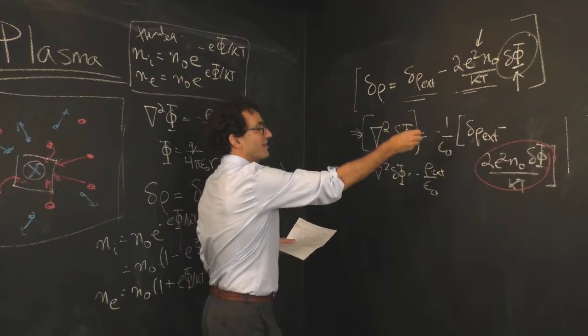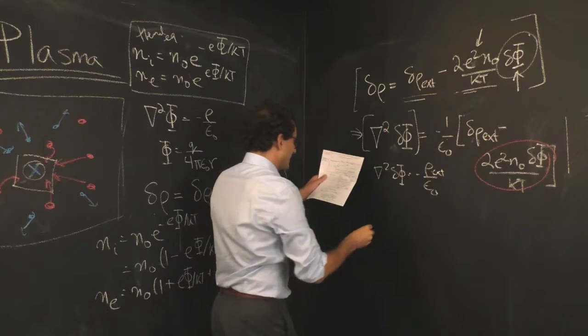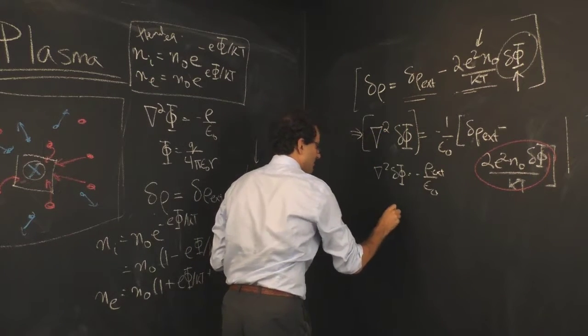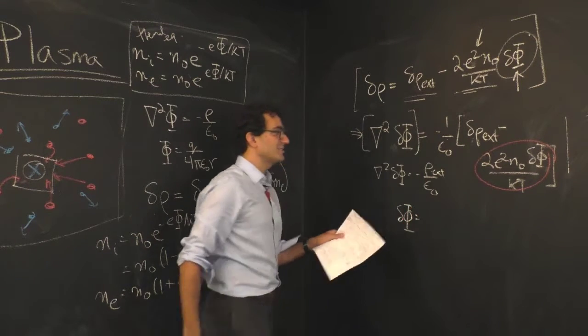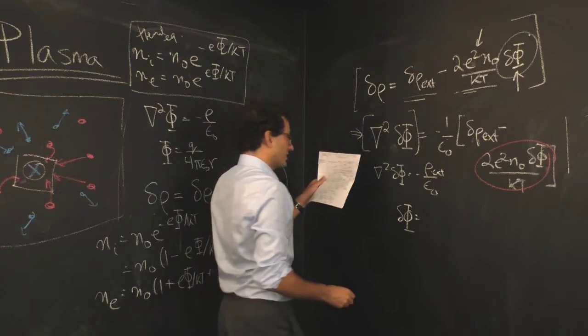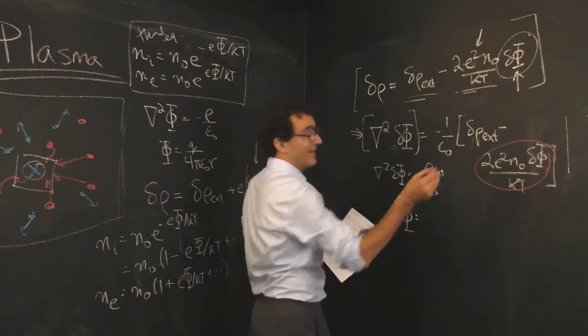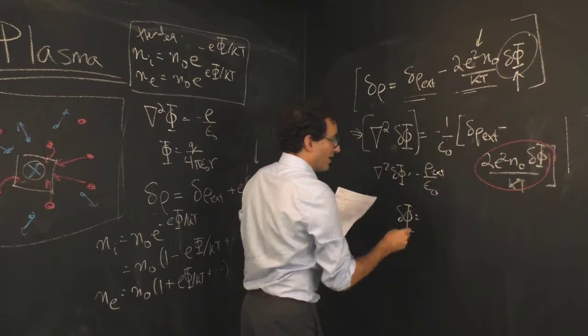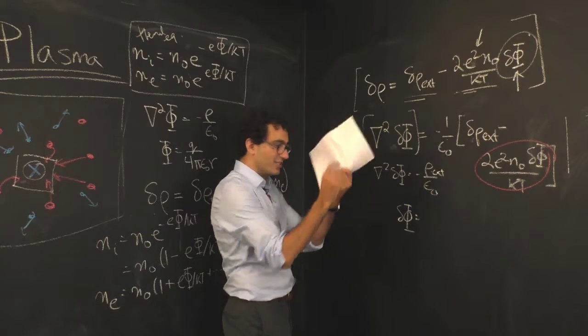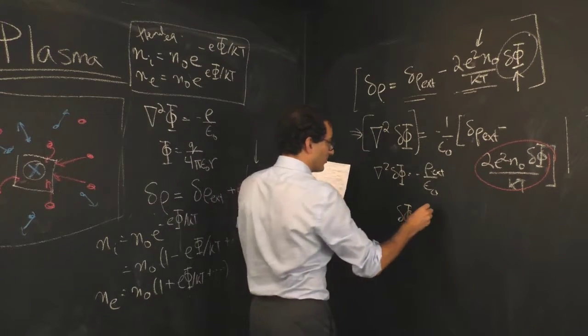Instead of walking you through how to solve this equation, I'll just give it to you. It turns out that the potential introduced by this small charge delta rho - and I'm saying it's now a point charge, we put it in at a single position, all the charge concentrated at a single point, and we'll call that total charge q.